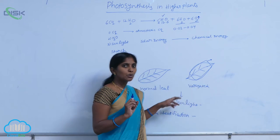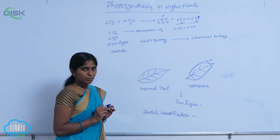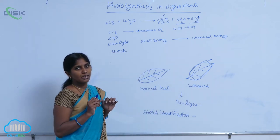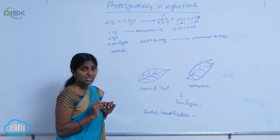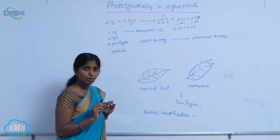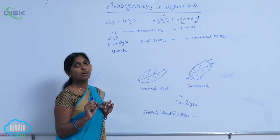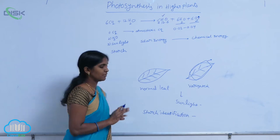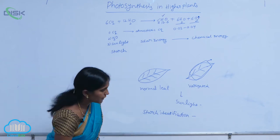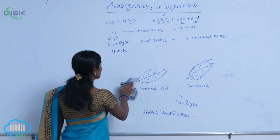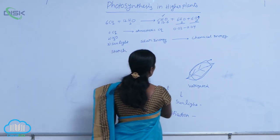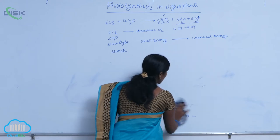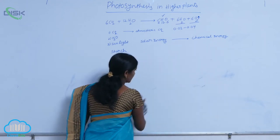So according to this experiment, starch is the end product — the product formed during photosynthesis. This is one experiment. Another scientist, Joseph Priestley, conducted a series of experiments.